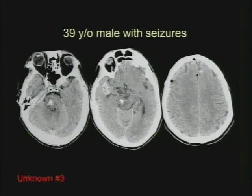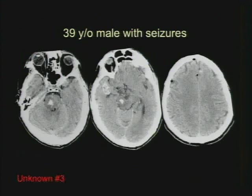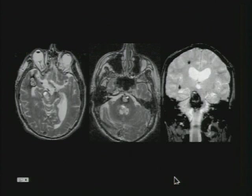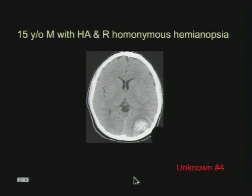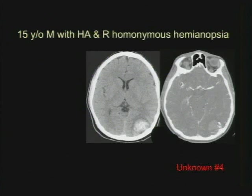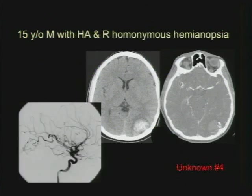The next patient is a 39-year-old male who comes in with seizures, and this is a non-contrast CT. The differential here — you've got multiple calcified lesions on CT. This is the MRI in the same patient: axial T2 sequence and a coronal gradient. The next patient is a 15-year-old who comes in with a headache and right homonymous hemianopsia. Here's the CT angio in that patient and the conventional angiogram.